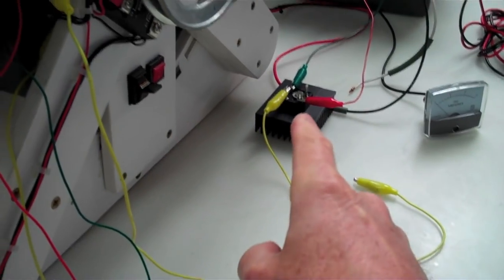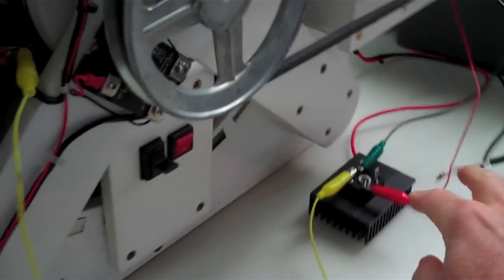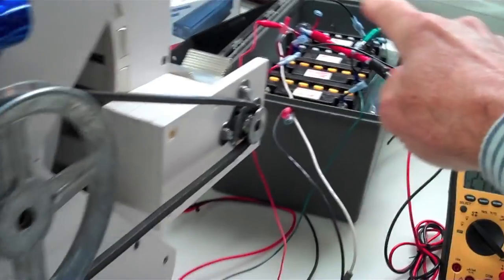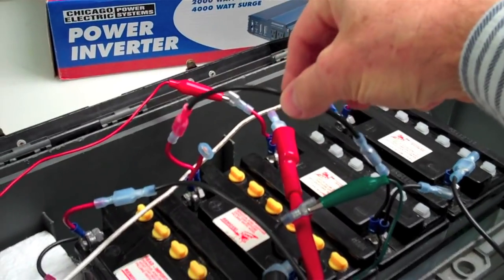The third phase here goes into the bridge rectifier here and the DC power off of this goes in to charge the batteries. The other two batteries in the center that are connected also in series for 24 volts.